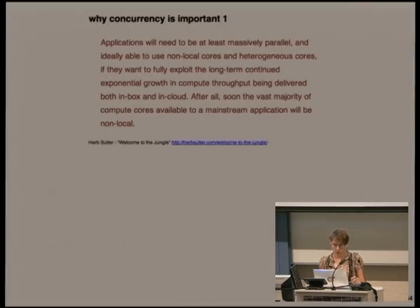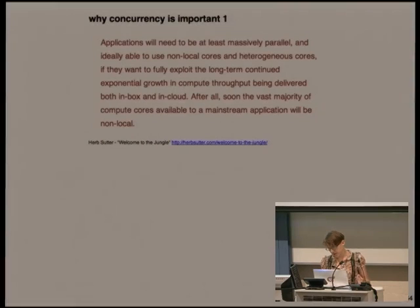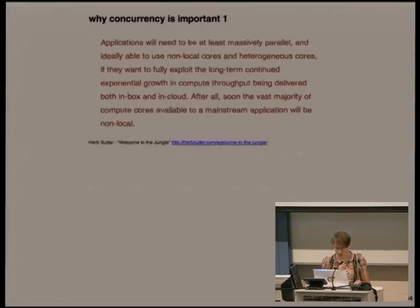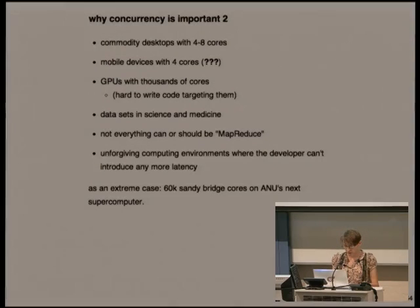Why is concurrency important? Basically, we have more or less hit the peak in the clock speed that can be improved on a given core. Desktop computers are getting faster by adding more cores. Supercomputers are using things like GPUs, which are massively parallel. Commodity desktops have a lot of cores, and there are phones that have four cores, which is insane.